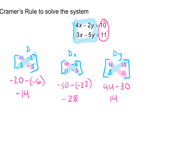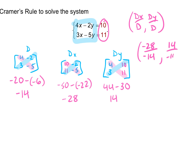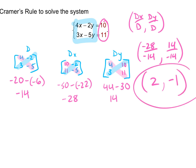Now to find our answers, we do D sub X over D, D sub Y over D. So D sub X is negative 28 over negative 14, and D sub Y is 14 over negative 14. Negative 28 over negative 14 is 2, and 14 over negative 14 is negative 1. So our answer is (2, negative 1).